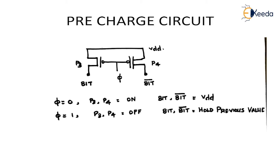When P3 and P4 are on, whatever voltage is at VDD will be discharged toward the bit and bit-bar lines, so both become pre-charged to VDD when PSI equals 0. This is why both bit and bit-bar can be of the same polarity. When PSI equals 1, P3 and P4 turn off, and the bit and bit-bar lines simply hold their previous value. This is the pre-charge circuit and how the bit and bit-bar lines get their values.